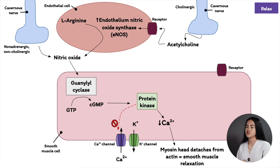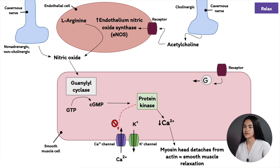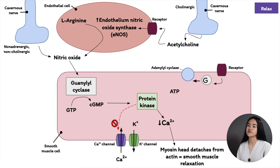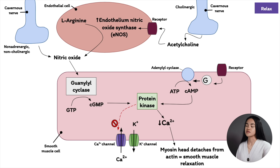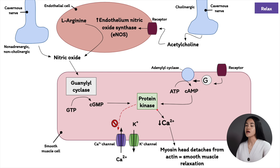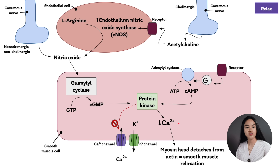Another second messenger is cyclic AMP, produced via a G protein acting on adenylyl cyclase. ATP is converted to cyclic AMP, and when cyclic AMP levels increase, it triggers the activation of cyclic AMP-dependent protein kinase. Again, this closes calcium channels, systolic calcium decreases, leading to smooth muscle relaxation and erection.